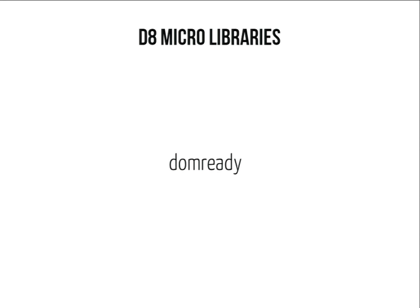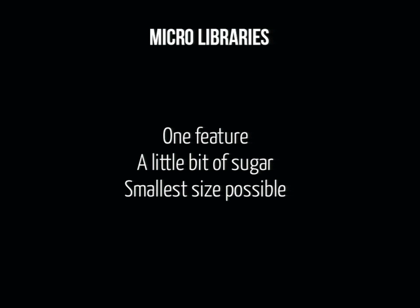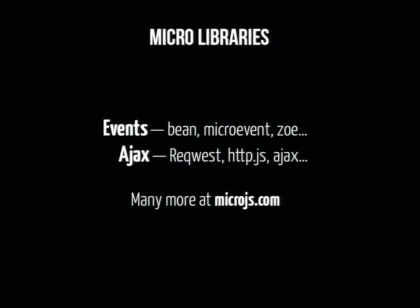Micro-libraries are very focused libraries that give you a little bit of sugar at the smallest size possible for one feature. We use one in Drupal 8 — that's DOM Ready. This one is used to initialize Drupal behaviors. When you load the page, the DOM content loaded event — DOM Ready takes care of that, so we don't have to deal with differences between IE, Firefox, Chrome, and all of that. It's like a 1K script that does the job well. We don't need jQuery for that. There are many micro-libraries available for events, Ajax, templating, and building your own JavaScript framework like Ember.js or Backbone.